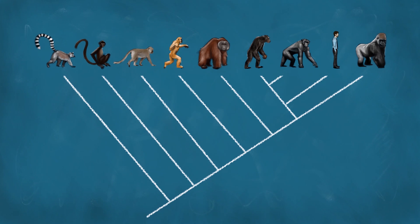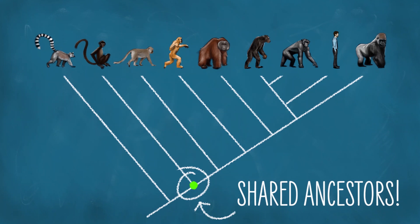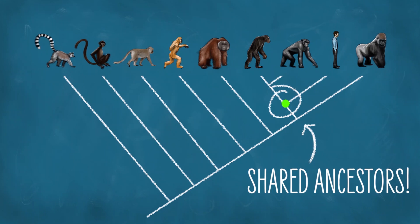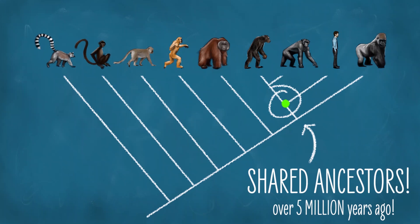What we can also see is that New World monkeys, Old World monkeys, humans, and chimpanzees all share ancestors. The last time that humans and monkeys shared ancestors was here, and the last time that humans and chimpanzees shared ancestors was here — over 5 million years ago. The thing is, 5 million years ago there were no chimpanzees.